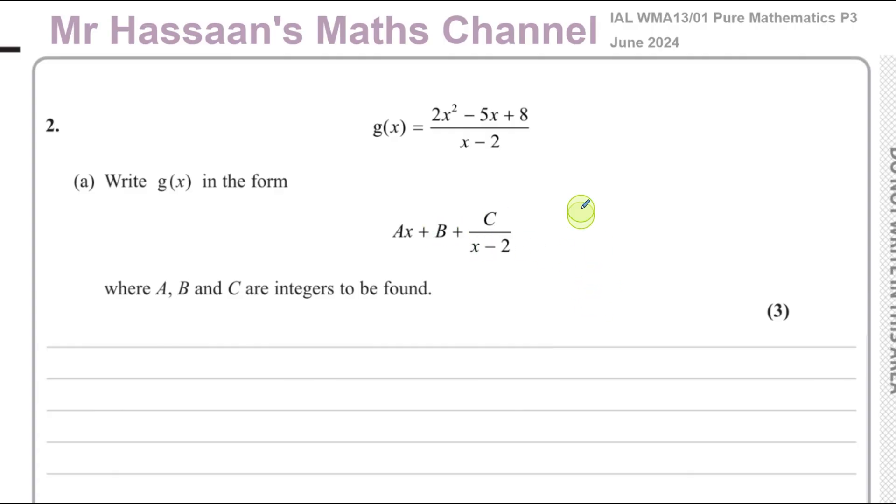Basically what we have here is an algebraic fraction which is considered an improper fraction. An improper fraction in algebra is one where the numerator has an order which is the same or less than the order of the denominator. By order I mean the highest power that it has. So this is a quadratic and this is linear.